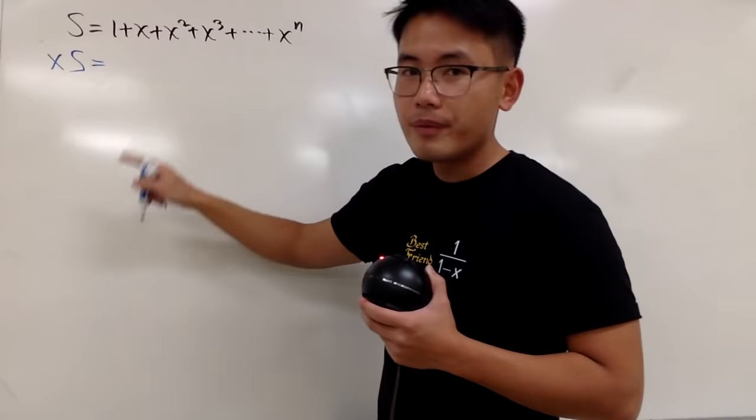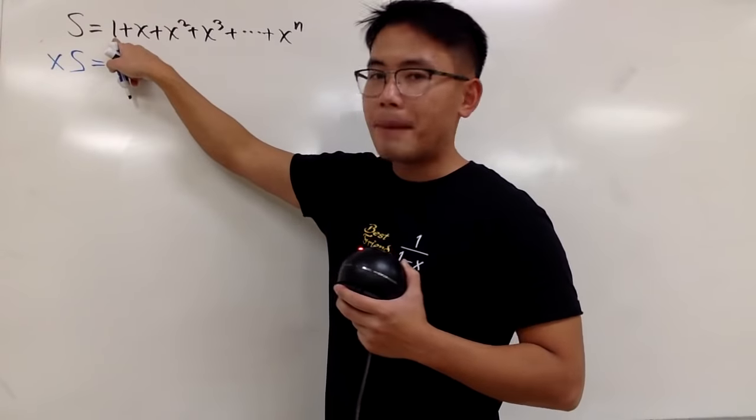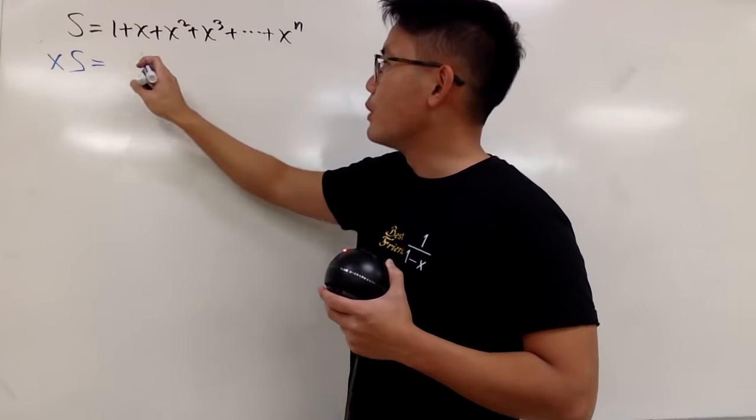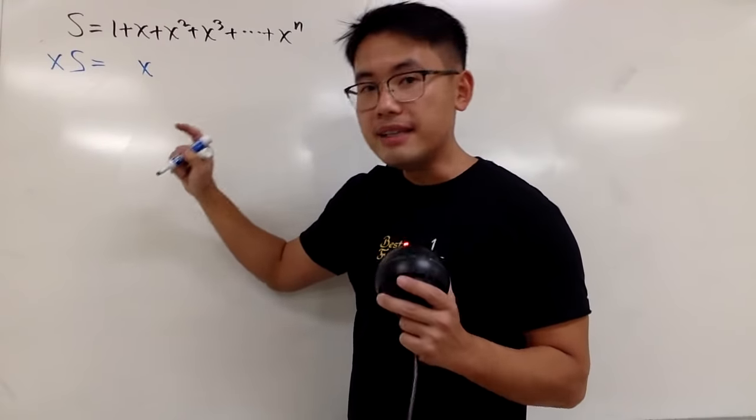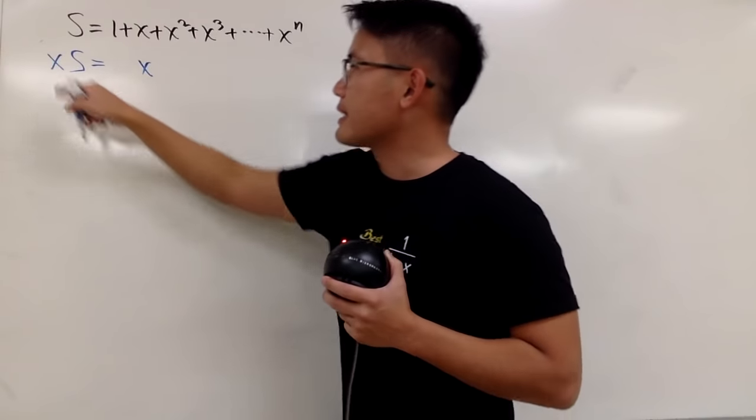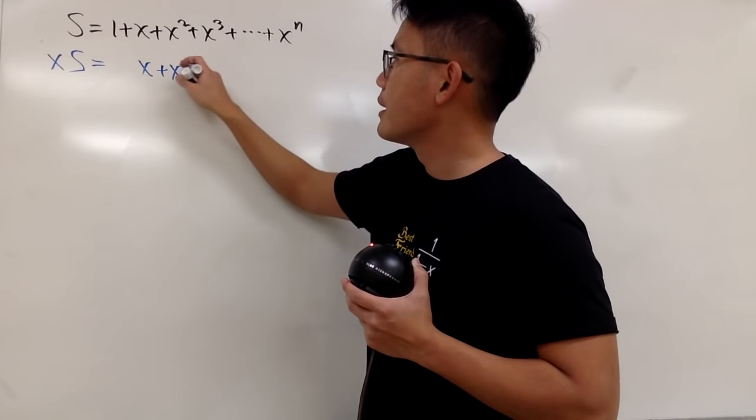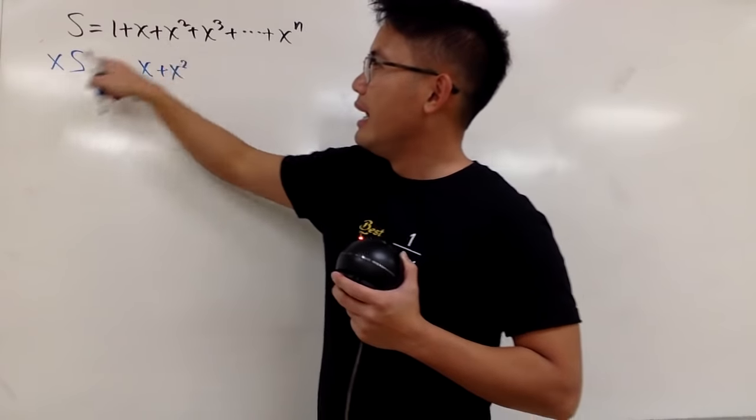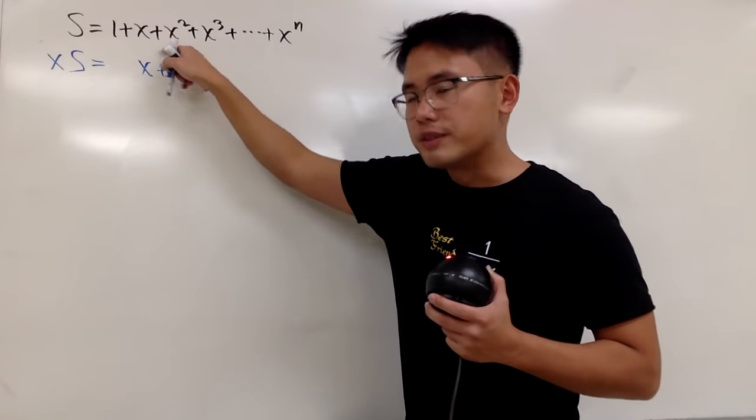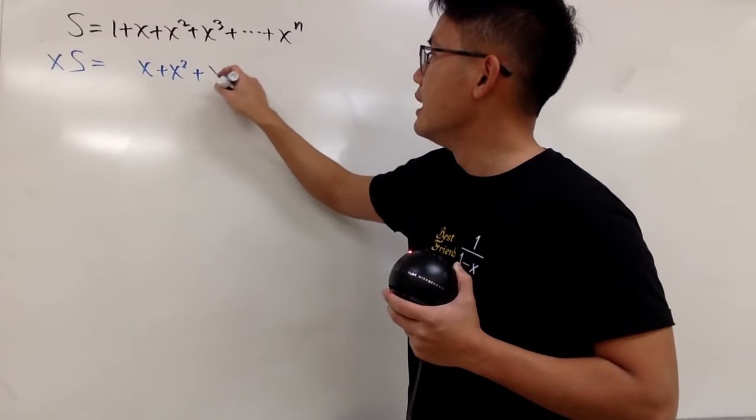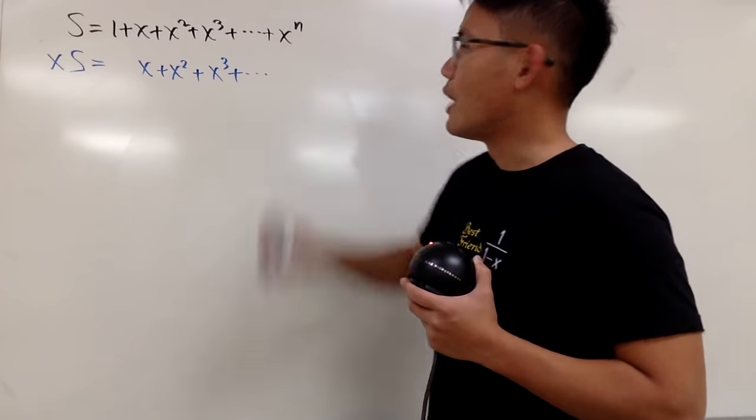And this is equal to, when I multiply 1 by x, I get x. So I will just put down x right here, I will line up. Next, I will multiply this x by x. So I get x squared, I will line up right here. And then when I multiply x with x squared, I get x to the third power. So I will just put down plus x to the third power, and so on.